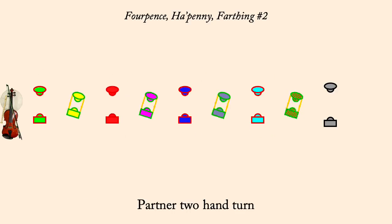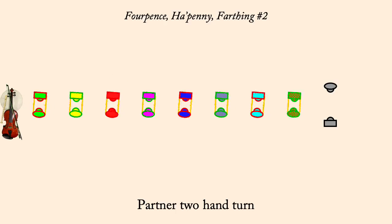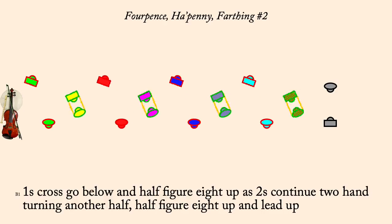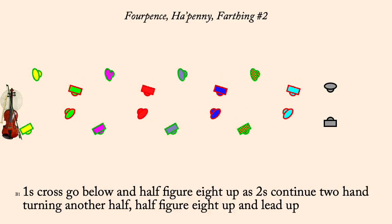Partner's Two-Hand Turn. One's Cross Go Below and Half Figure Eight Up as Two's Continue Two-Hand Turning Half, then Half Figure Eight Up and Lead Up.